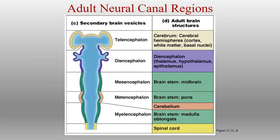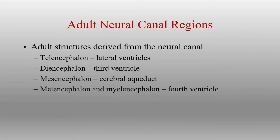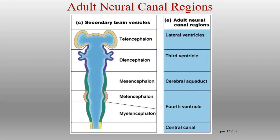So we have this differentiation that occurs within development all the way from that beginning neural tube. There was kind of this open space in the center of the neural tube through the primary and secondary vesicles, and that open space — that blue portion — is what's going to become the ventricles of the brain.